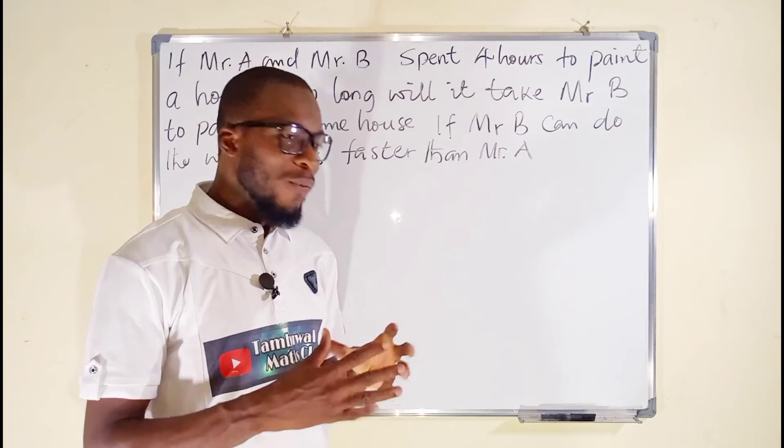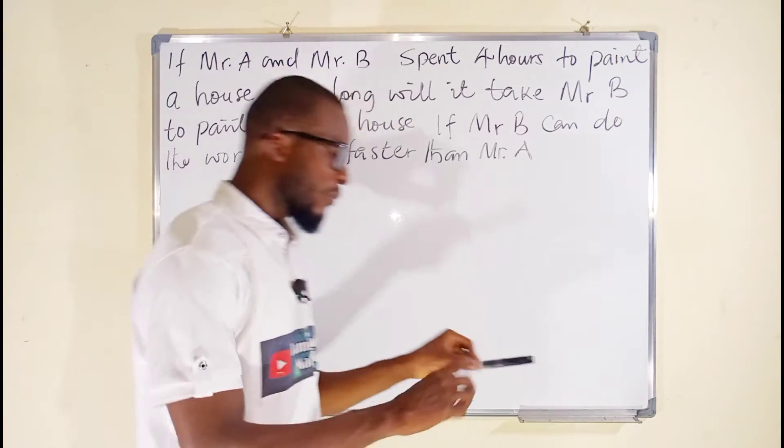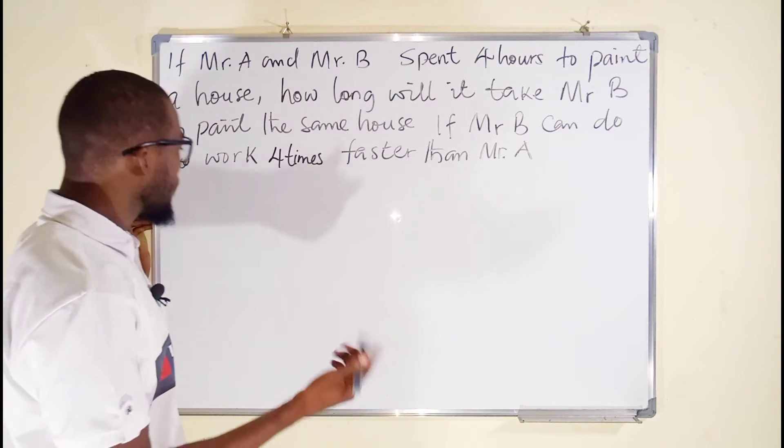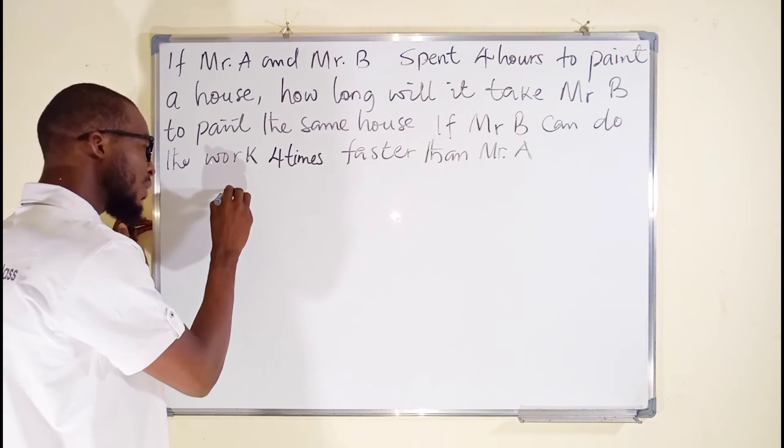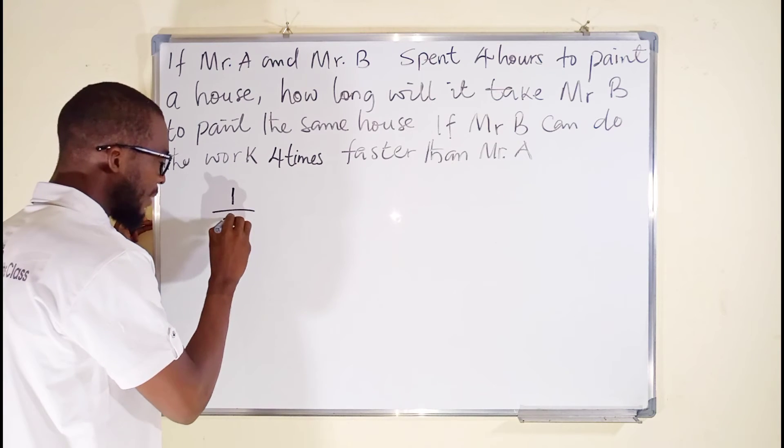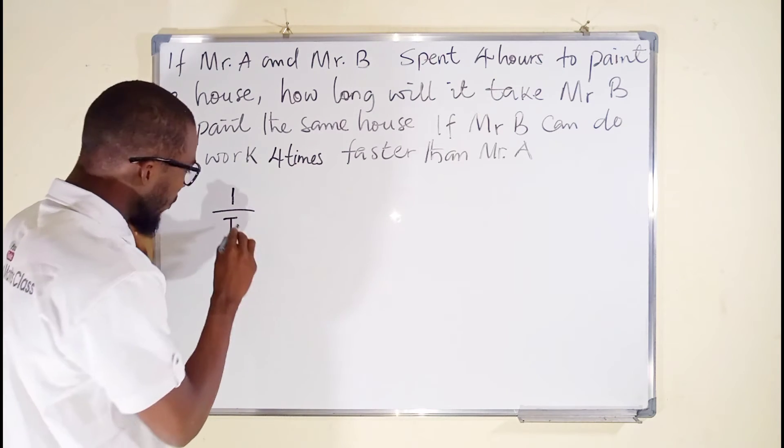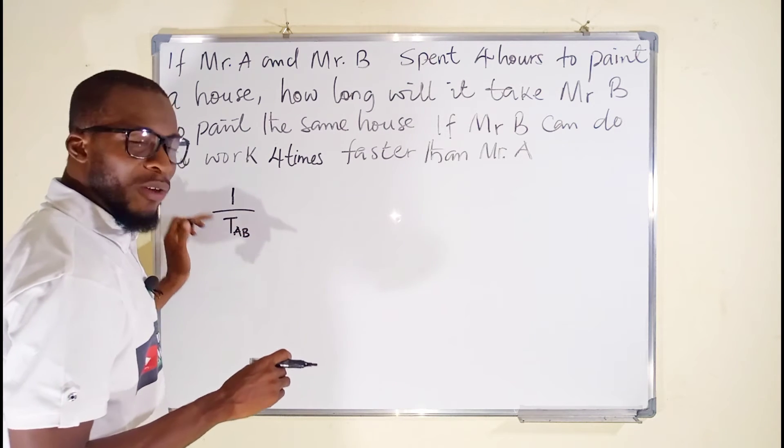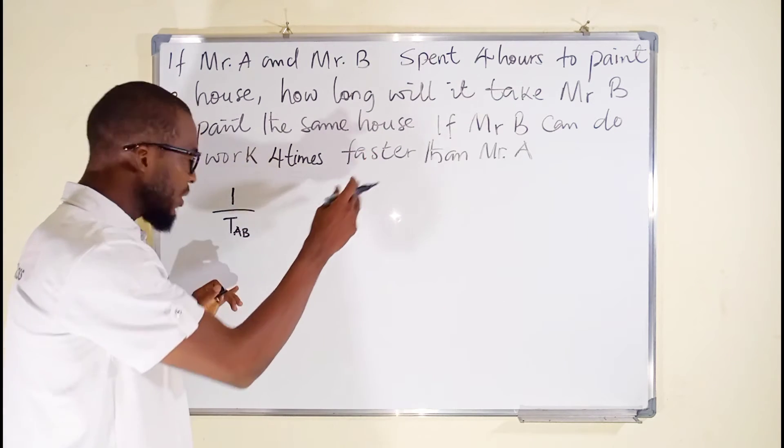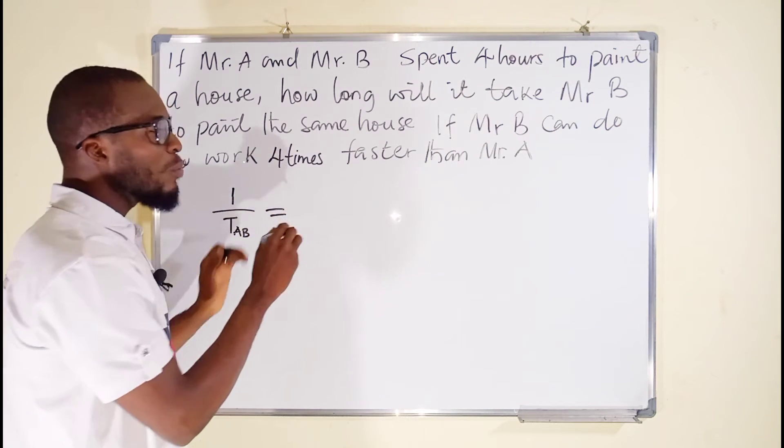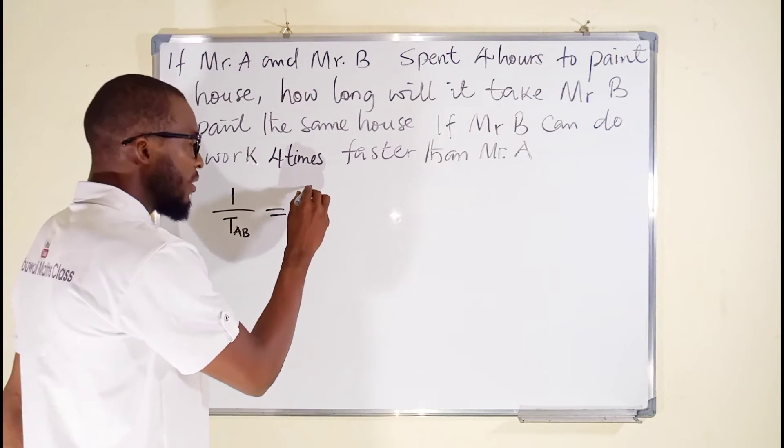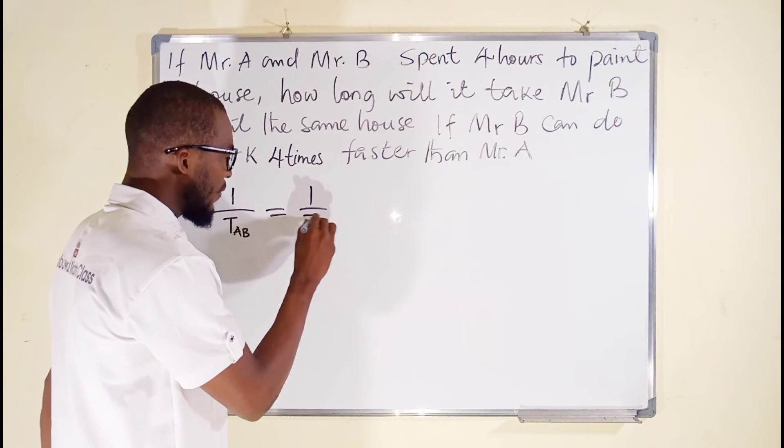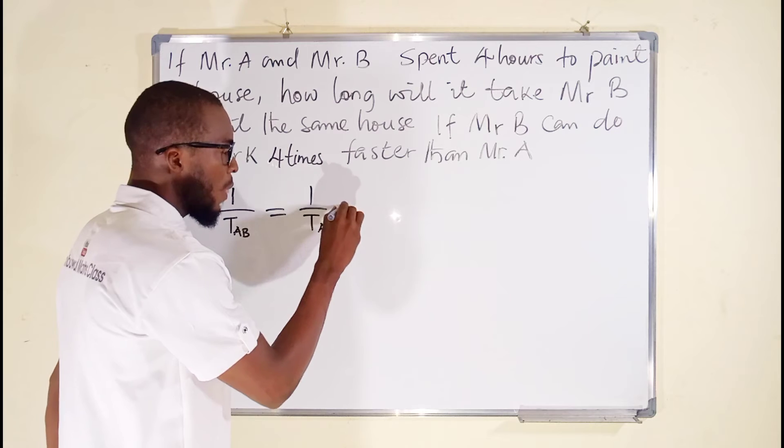So first of all, let me write the formula. The formula of work and time for more than one individual says the reciprocal of the time taking them all—in this case we have Mr. A and Mr. B—is equal to the sum of the reciprocals of the time taking them to work individually. So we have 1/T_AB = 1/T_A + 1/T_B.